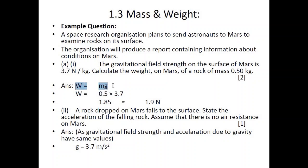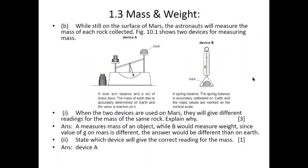For a two-mark question, for one mark you must state the formula you are going to use, and for the second mark you plug in the values and calculate the final answer. If you don't write the formula and simply give the answer directly, you will lose one mark. Next part: a rock dropped on Mars falls to the surface — state the acceleration of the falling rock. Since gravitational field strength and acceleration due to gravity always have the same value, the answer is 3.7 m/s².